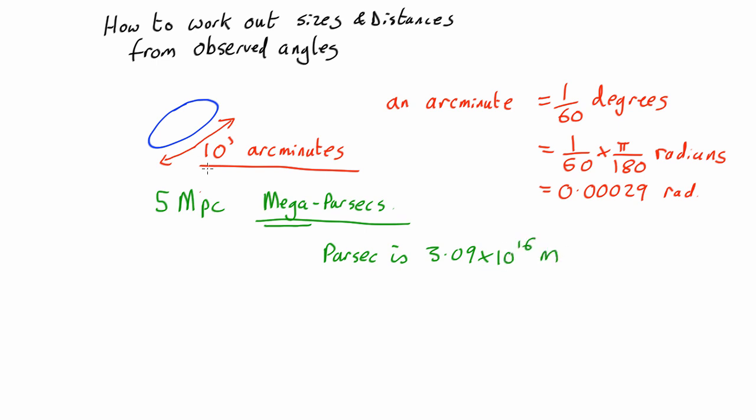So we have a galaxy, it's 10 arc minutes across, and it's 5 megaparsecs away. The first question we might ask is, how big is it? So that's an angular size, but what's its actual physical size?